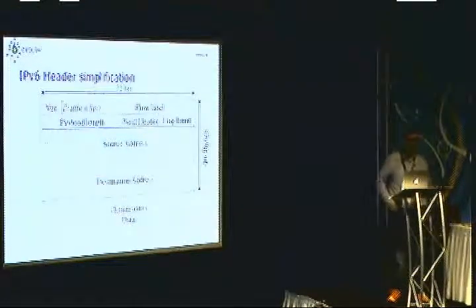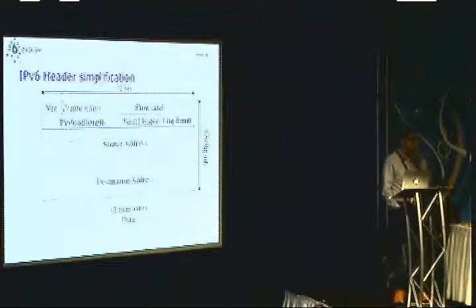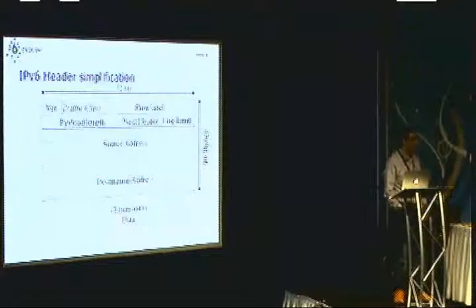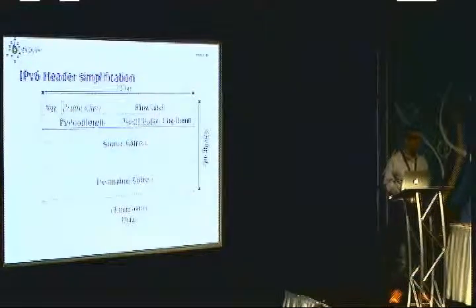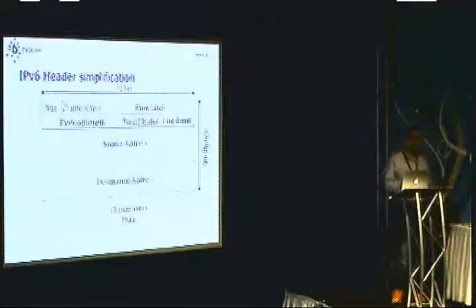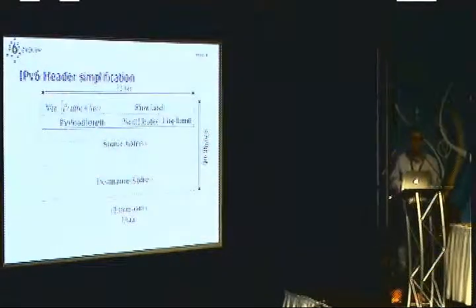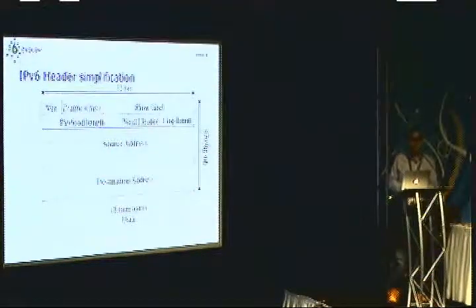Then we have the extensions — they are like options, but the difference is that extensions are not processed by routers. Only the hop-by-hop extension is the one that routers look at. The rest of them are just for end hosts. So routers don't need to check them, which makes IPv6 a bit easier to process because they don't have to inspect options.